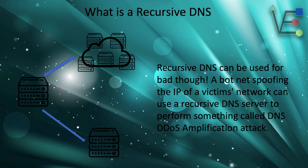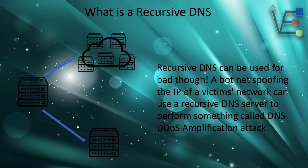As you can imagine, if your recursive DNS server was used in an attack against a victim's network — say virtualizeeverything.com — virtualizeeverything.com will blacklist the IP address of your server. Being that it's self-hosted, that will be the IP address of your network connection, preventing you from visiting virtualizeeverything.com or interacting with it in any way.